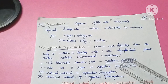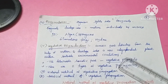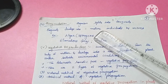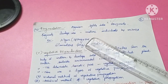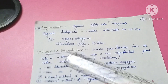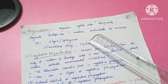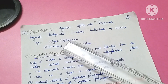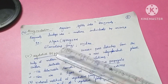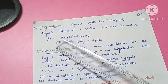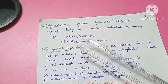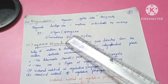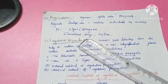The next concept is fragmentation. Fragmentation is a form of asexual reproduction where an organism splits into fragments, and each of these fragments develops into a mature, fully grown individual through mitosis. Examples of fragmentation include Spirogyra, filamentous fungi, and Hydra.